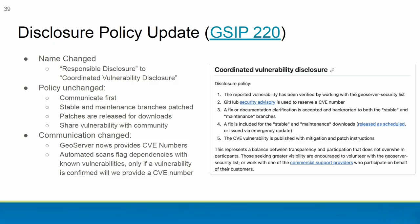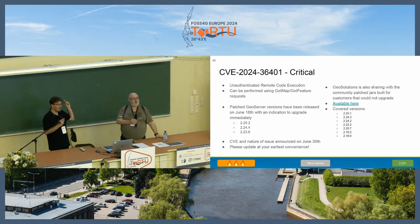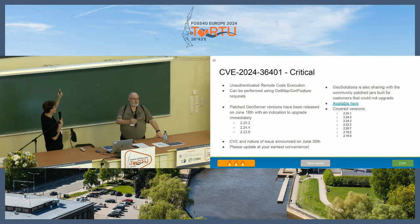In terms of security vulnerabilities, we have a new disclosure policy process which you should follow when reporting any vulnerability. Please read it carefully before making any report — don't ever report a security bug on the user list or the ticket tracker because they are public. Just yesterday we announced CVE-2024-36401, which is an unauthenticated remote code execution that allows someone to send a request and make code execute in GeoServer without your control. You should be upgrading as soon as possible. We made updates for 2.25, 2.24, and 2.23.